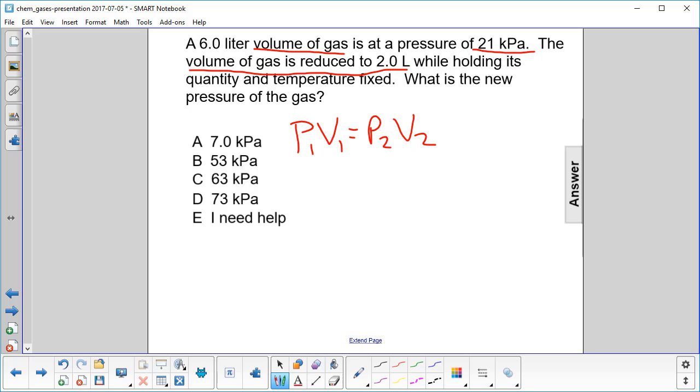We're trying to find the new pressure, which is P2. Do a little rearranging. P2 is V1 over V2 times P1.